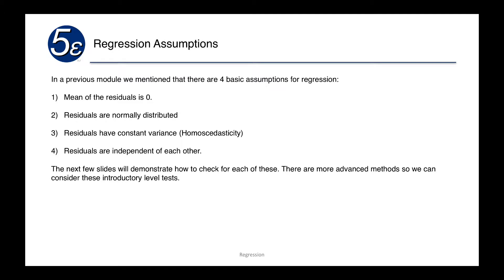Number one, that the mean of the residuals is zero. That the residuals are normally distributed around the regression line. That the residuals have constant variance or homoscedasticity. And that the residuals are independent of each other.